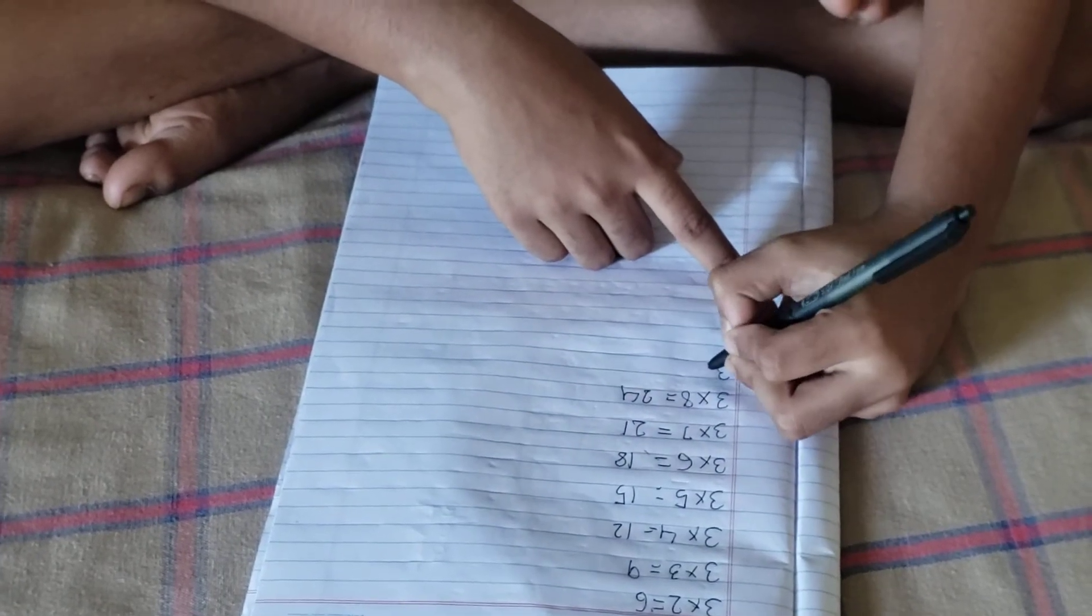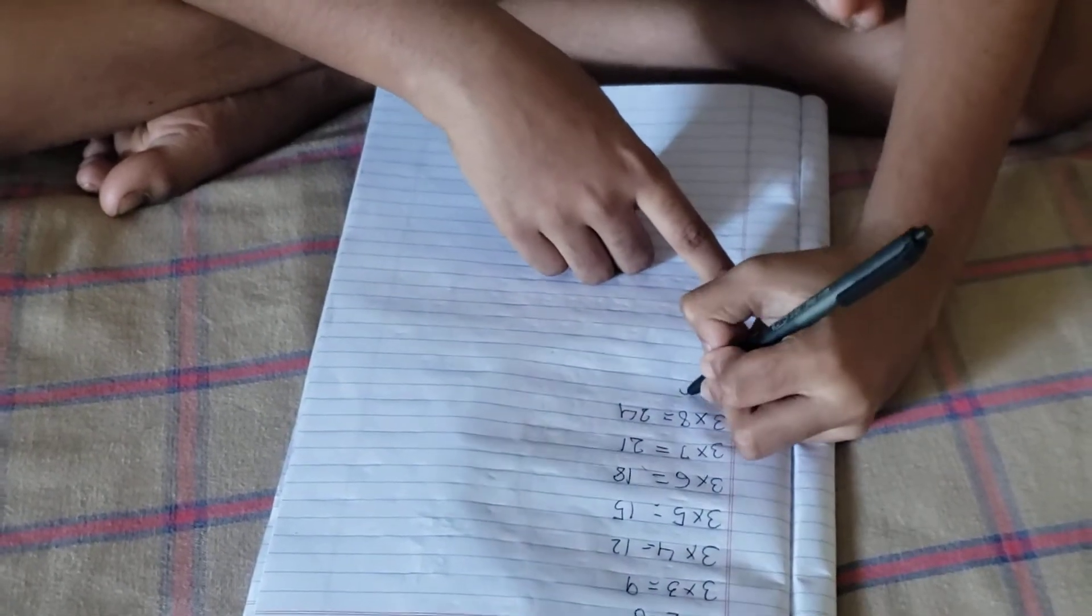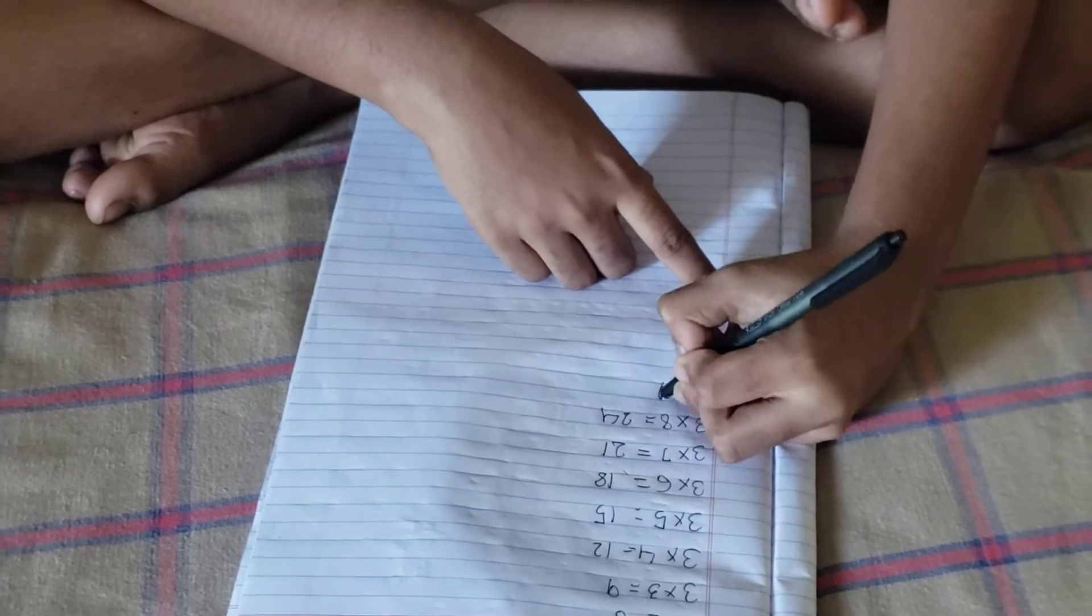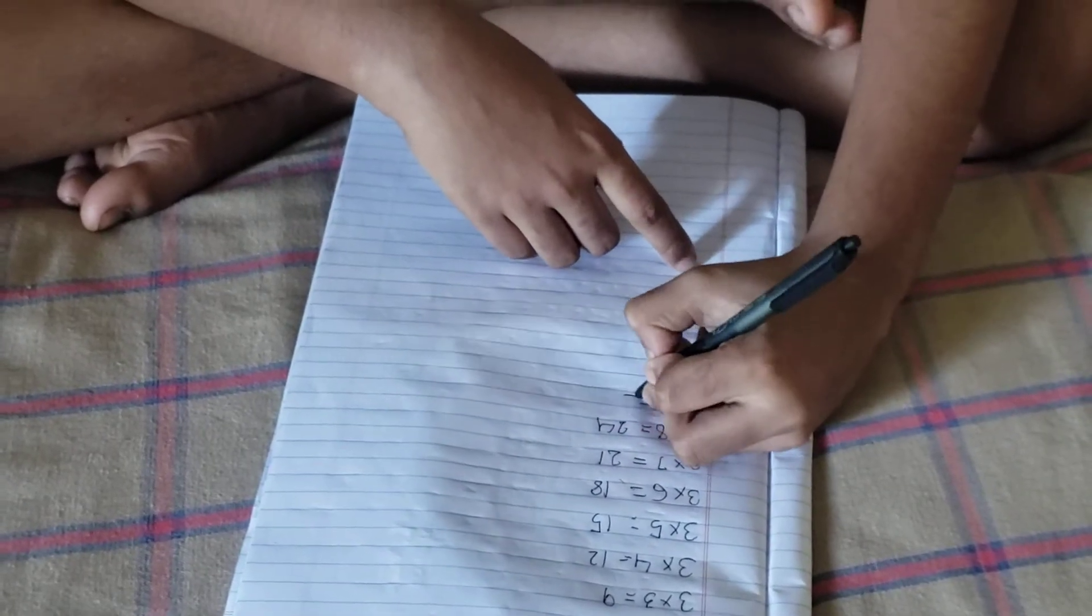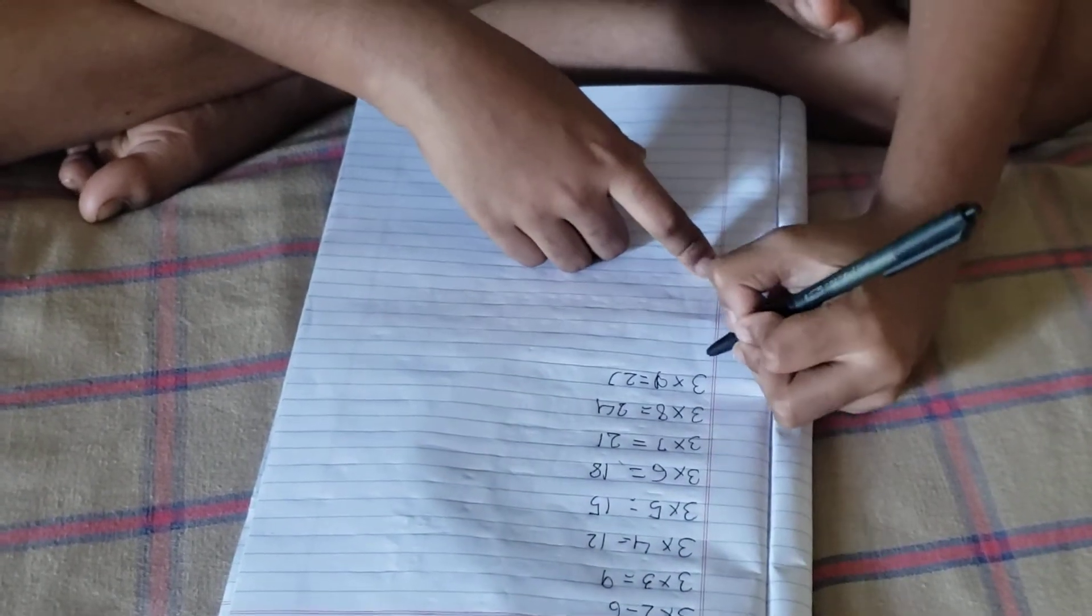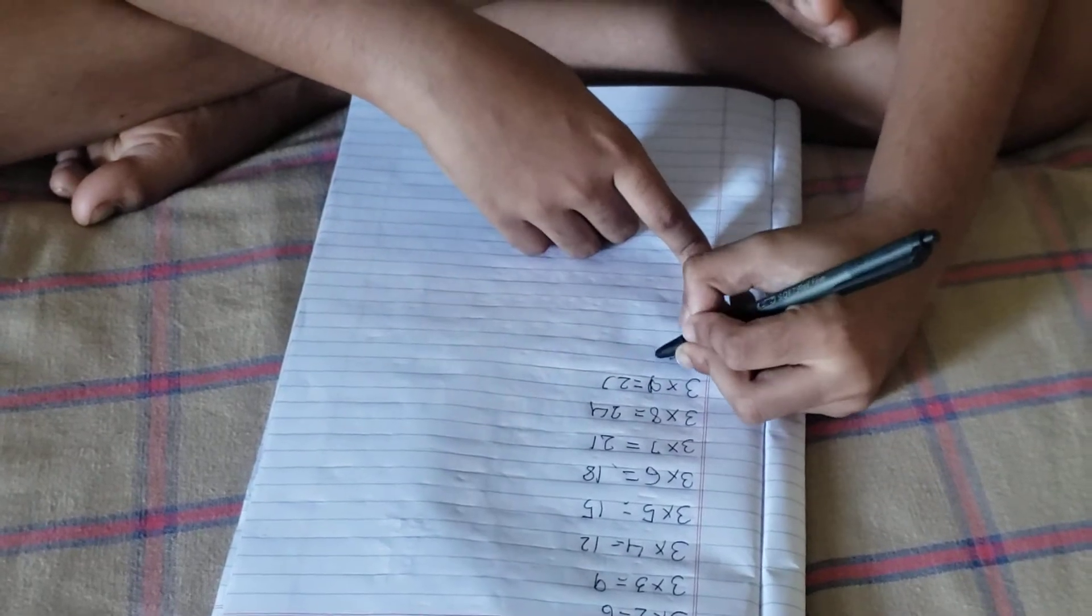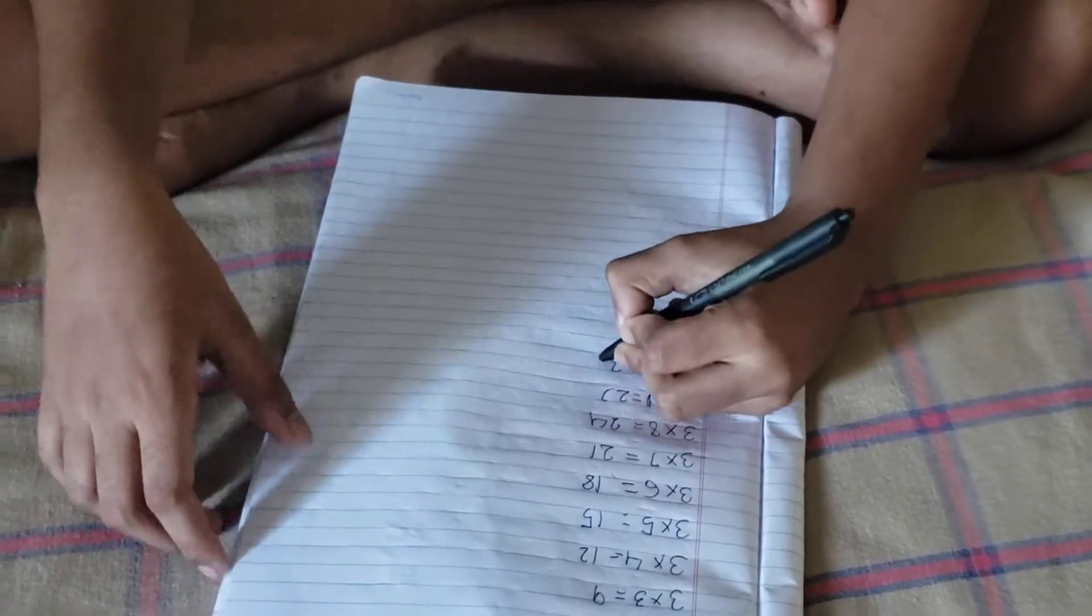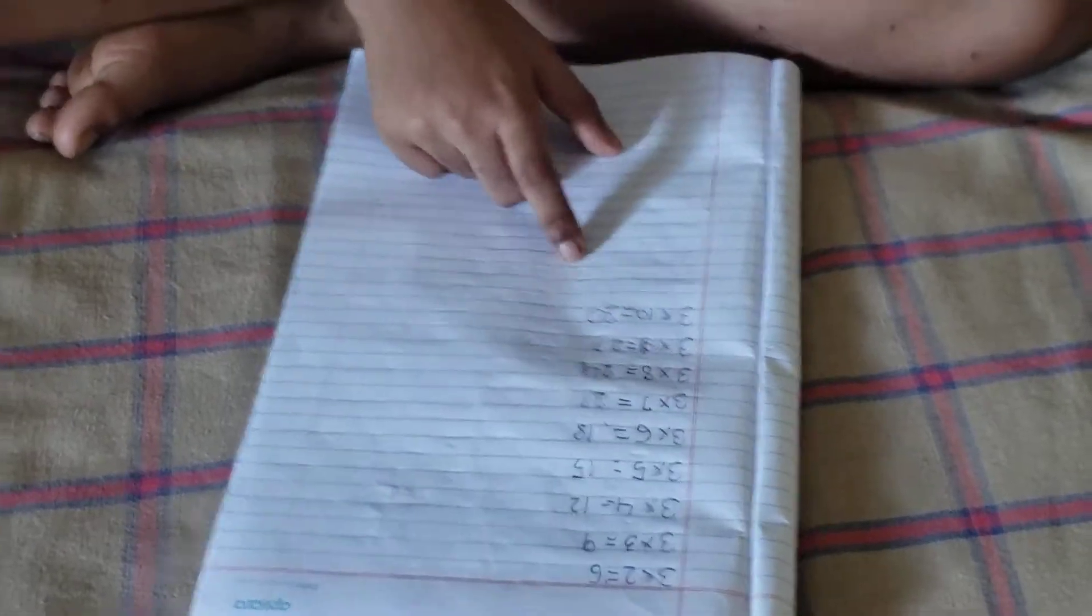3 times 9 equals 27. And 3 times 10 equals 30. So we wrote 3 table.